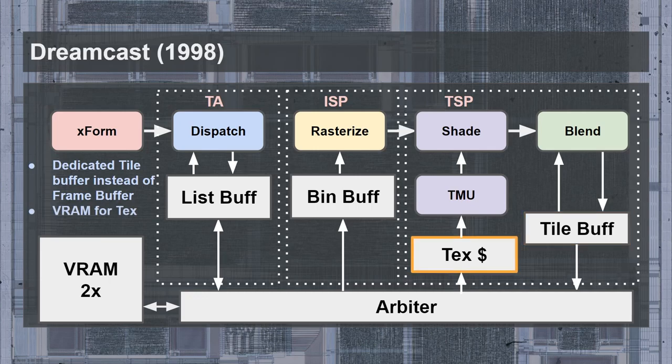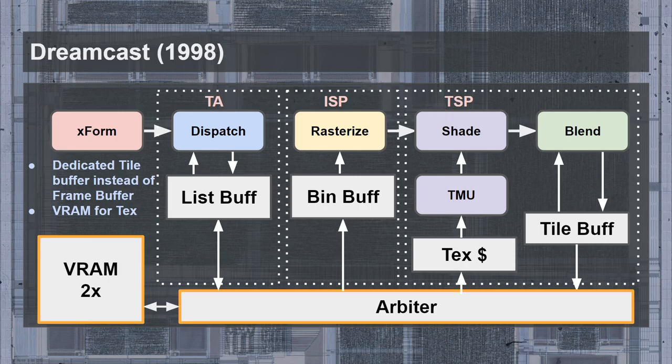The main source of memory bandwidth came from reading texel data during shading. Even though the TMU was backed up by a texture cache, the reduction in frame buffer bandwidth was used as motivation to reduce its capacity — effectively the capacity of the texture cache was given to the Tile Buffer instead, resulting in a meager 1 KB texture cache. The bandwidth requirement was further reduced by limiting all texture formats to 16 bits rather than also supporting 32-bit textures. The memory system was tied together with an arbiter connecting to a dedicated dual-channel video memory, allowing the display list queue, frame buffer writeback, and texture refills to be performed in parallel.